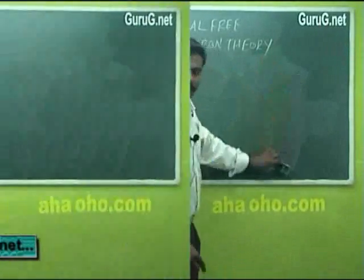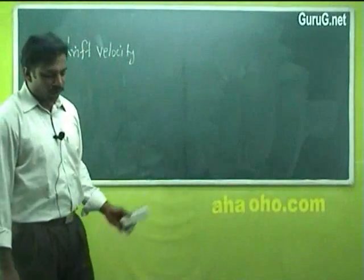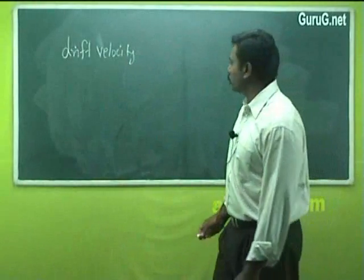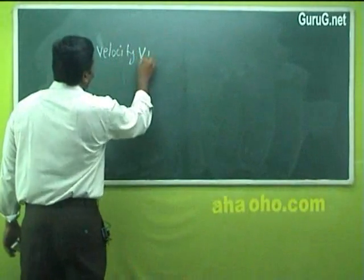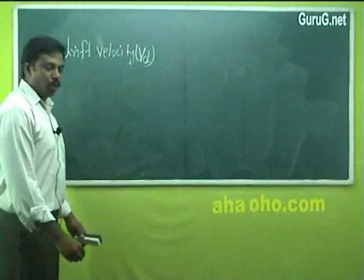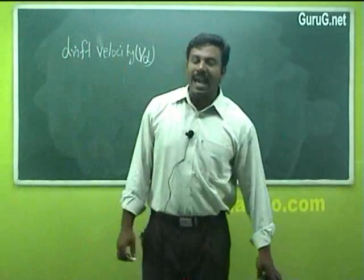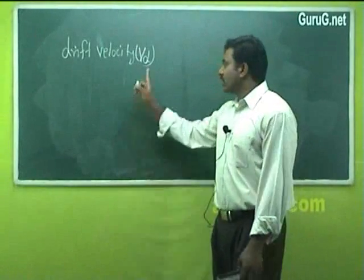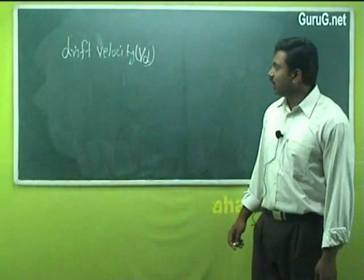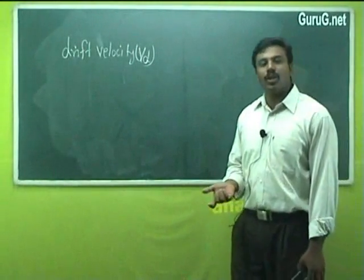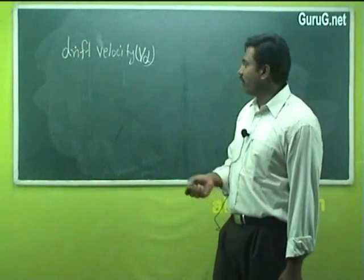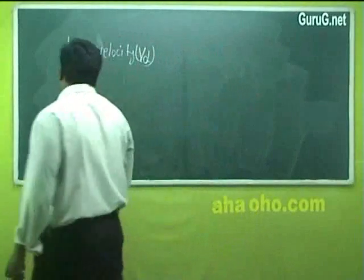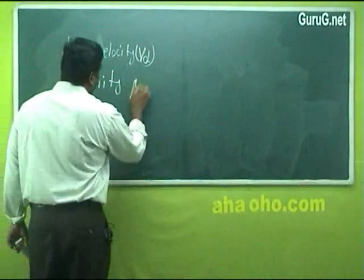Before deriving an expression for the thermal conductivity and the electrical conductivity of metals, we should know some basic definitions. The first one is drift velocity, represented by Vd. Drift velocity is the average velocity acquired by an electron in a particular direction on the application of the electric field.